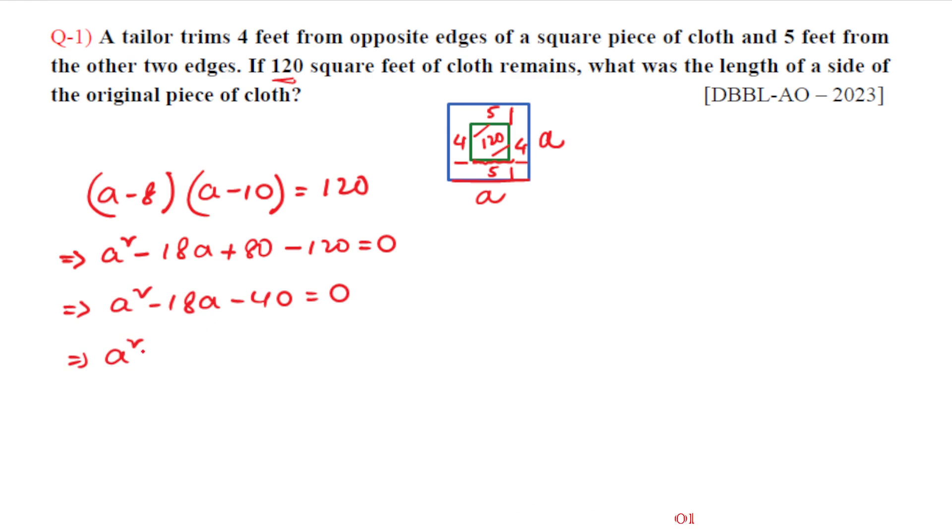a squared minus 20a plus 2a minus 40 equals 0. Factoring: a minus 20 equals 0 or a plus 2 equals 0. So a equals 20 or a equals minus 2. Length cannot be negative, so a equals 20. The length of side of the original piece of cloth is 20 feet.